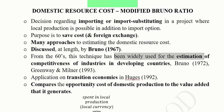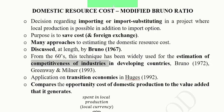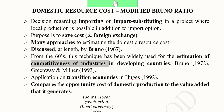This is why we collectively call this topic the modified Bruno ratio. Since the 1960s, this technique has been widely used for estimating the competitiveness of industries in developing countries. It helps decide if import substitution is cost effective or if importing is cost effective — guiding us about the comparative advantage of local industries. It is also applied to transition economies.